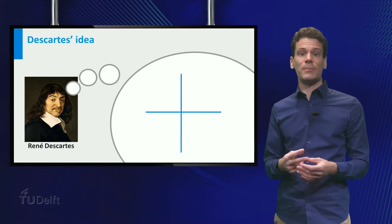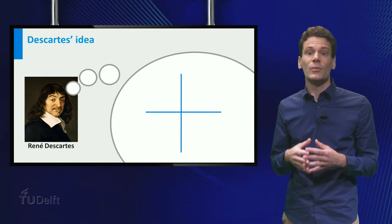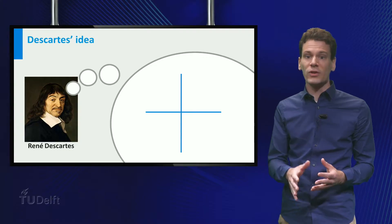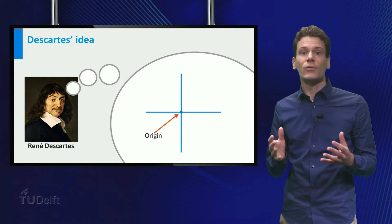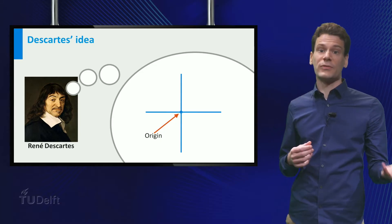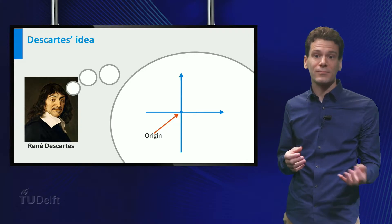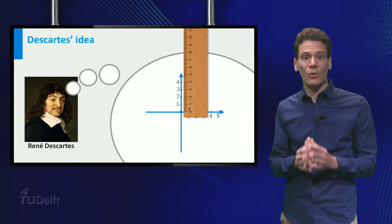Pick two lines in the plane that intersect at a right angle. As before, we can associate a number to each point on both lines. As origin, we take the point of intersection of both lines. For each line, we choose a positive side, here indicated using arrowheads. Then, we use our ruler to associate numbers to points on the lines.